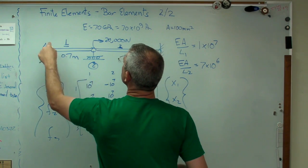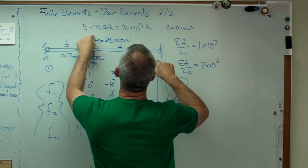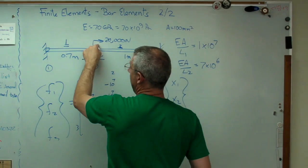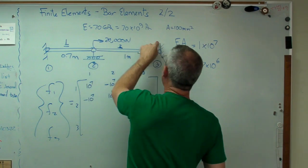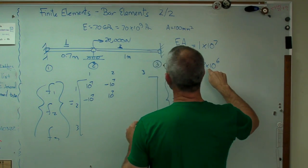Now, global grid points, one, two, three. I got one and two taken care of. Now this element connects two and three. That's element grid point one, element grid point two. So what I'm going to do is I'm going to add those points in there.